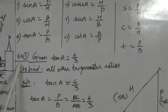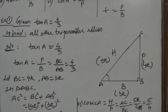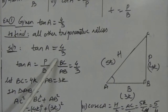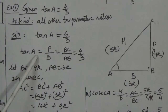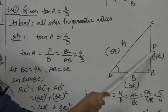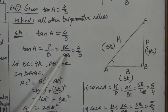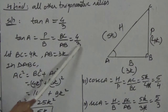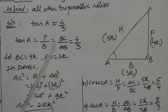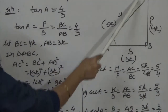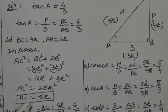Now to apply trigonometric ratios, we will solve example one. In example one, tan A equals 4 by 3 is given, and we have to find all other trigonometric ratios. Tan A = BC upon AB = 4 by 3, so taking common multiple k: BC = 4k and AB = 3k. By using Pythagoras theorem, AC square equals 25k square, so AC = 5k.